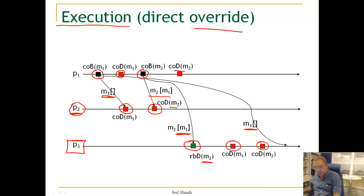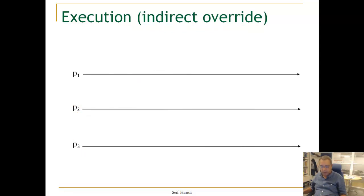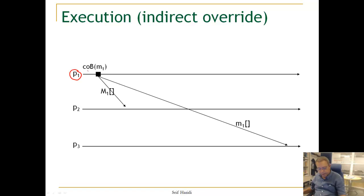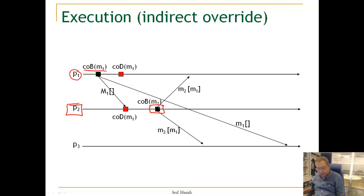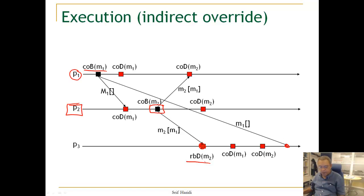This is called a direct override, where two messages coming from the same process — in this case P1 — arrive in different causal order, because causal order follows the FIFO order from each process. Because the history is carried with the second message, we can deliver the first message before the second. There is also an indirect override: P1 causally broadcasts M1, then P2 causally broadcasts M2, but M2 arrives at P3 before M1. When M2 is RB-delivered, its past list allows M1 to be delivered first, indirectly. When M1 later arrives, it is simply ignored.